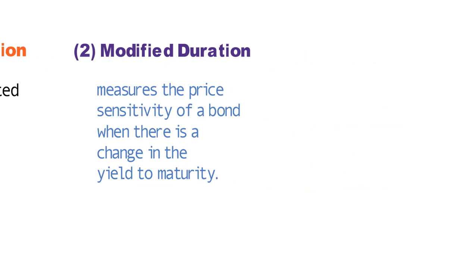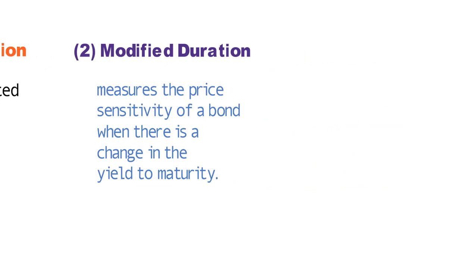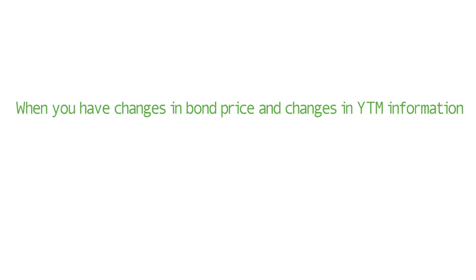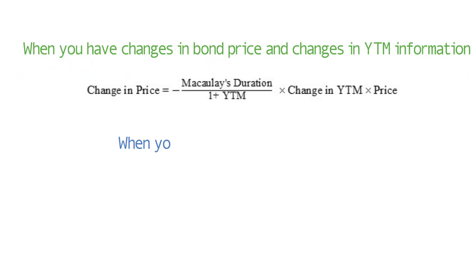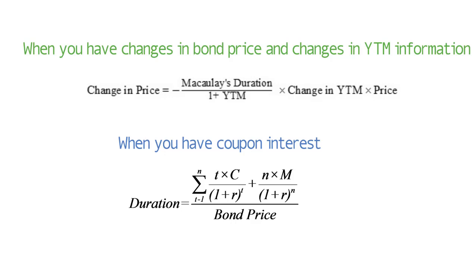To calculate Macaulay duration, there are two formulas. When you have changes in bond prices and changes in YTM information, use this formula. On the other hand, when you don't have information on changes in bond prices or YTM but have coupon interest payment, use this formula. Let's take an example where I calculate duration using the first formula. I will use the second formula in another video.